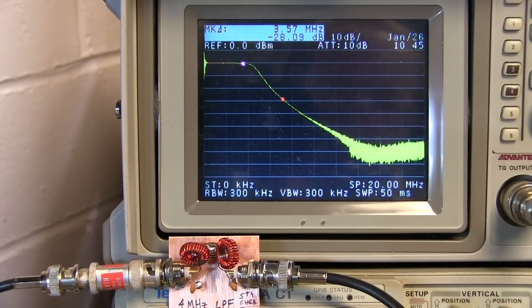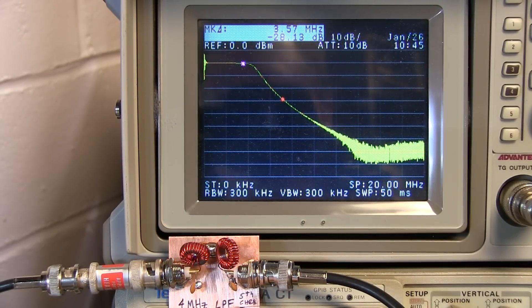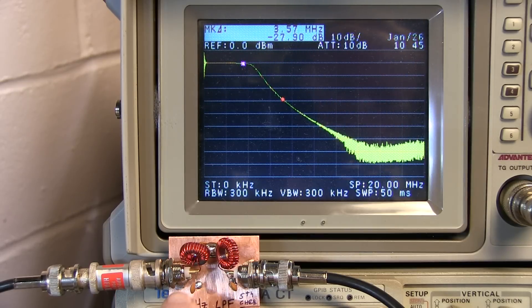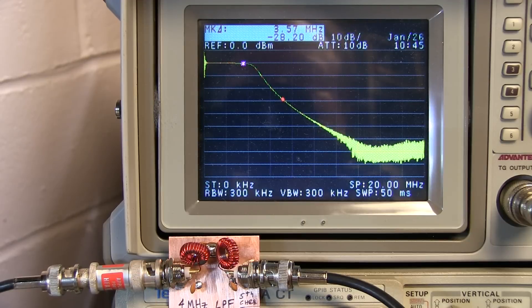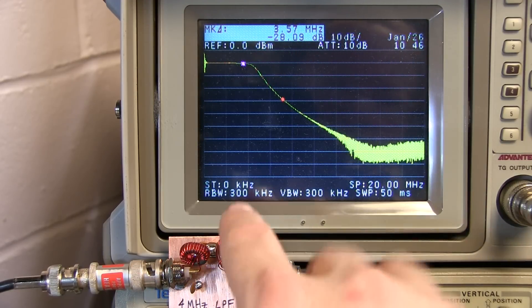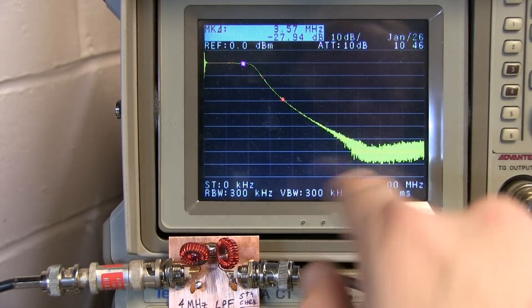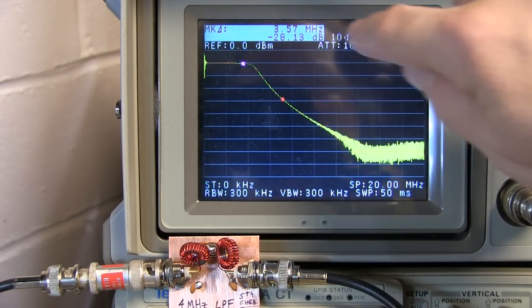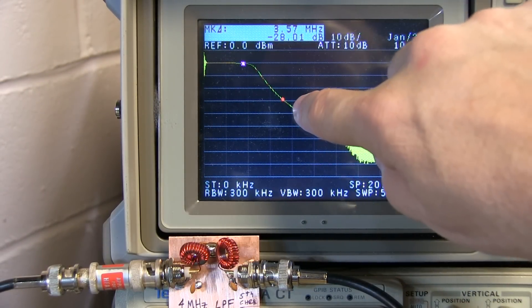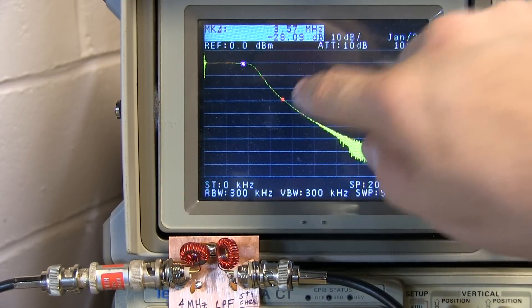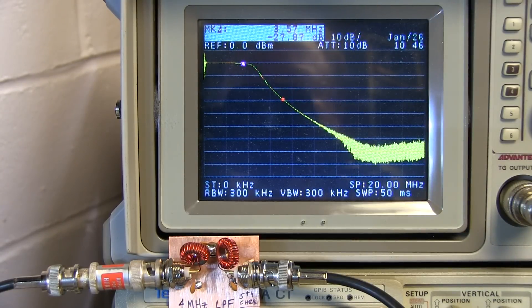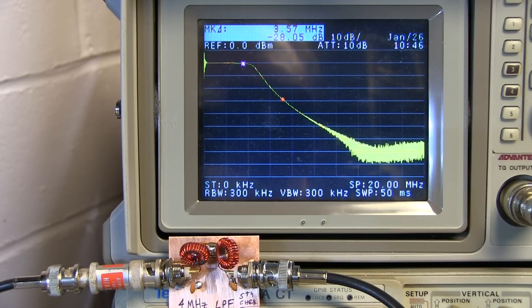It's good practice when testing a filter using a tracking generator and a spectrum analyzer to put an attenuator, like I've got a 10 dB pad in here, so that the tracking generator always sees a reasonably good 50 ohm load. So, I'm just sweeping here from essentially near DC out to 20 MHz, and I've got the marker sitting at 3.579 MHz, and then a delta marker that's 3.57 MHz away, so that would represent where the second harmonic is, and that says that the second harmonic should be knocked down by about 28 dB. So, let's go put it on the output of the Michigan Mighty Might and see what we get.